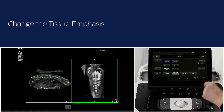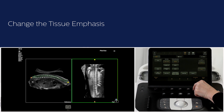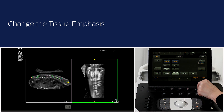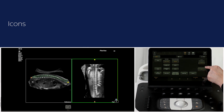Four settings are available that can change the appearance of the strong interfaces from intense to soft. Change tissue emphasis by choosing a setting between one and four.